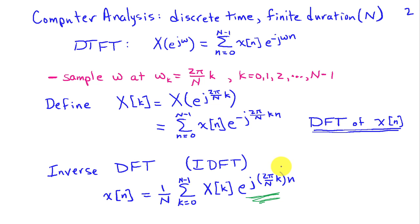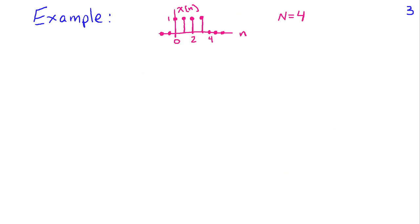But if you look at this, this is computable now because in both cases we have discrete quantities and we have finite size sums that we're evaluating. So these are amenable to computer calculation. We have an example that I'm going to look at, a very simple signal here, where we have 1 from 0 to 3 and then 0 outside of that. We're going to look at the DFT for N equals 4.